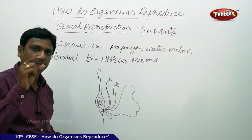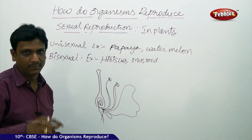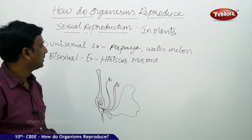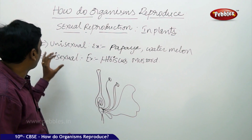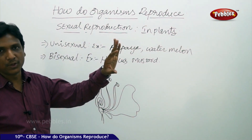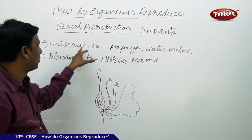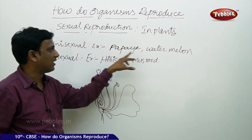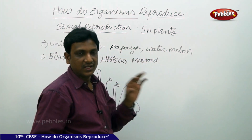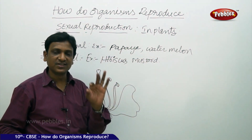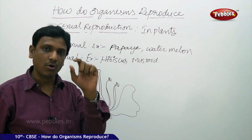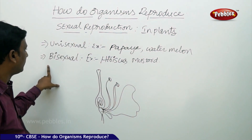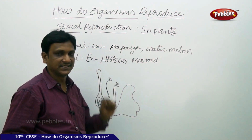Some flowers consist of both male and female parts, while some flowers consist of either male or female parts. If a flower consists of either male or female reproductive organs, it is called a unisexual flower — examples are papaya and watermelon. If a flower consists of both male and female reproductive organs, it is called a bisexual flower — examples are hibiscus and mustard.